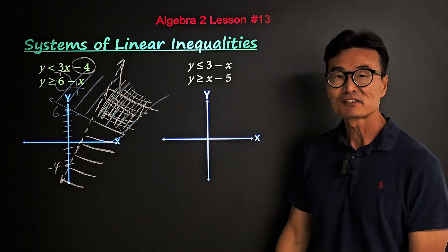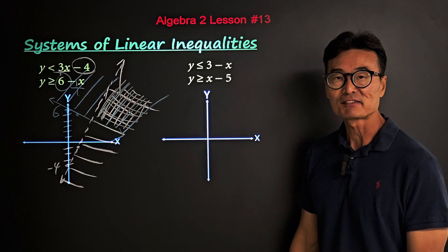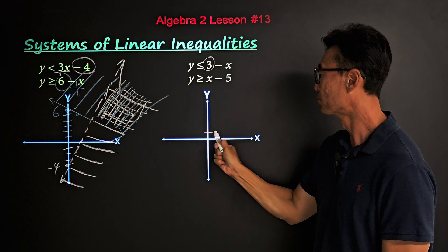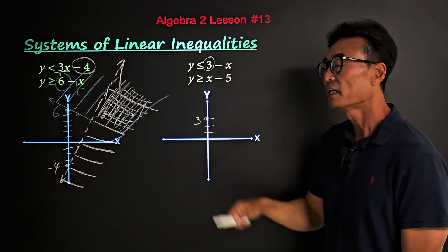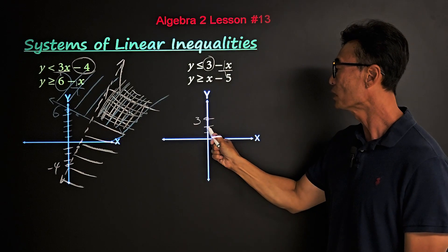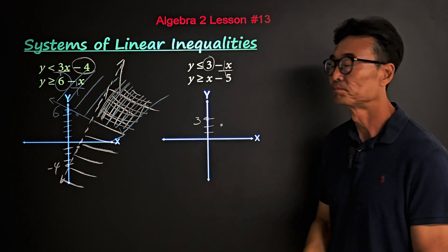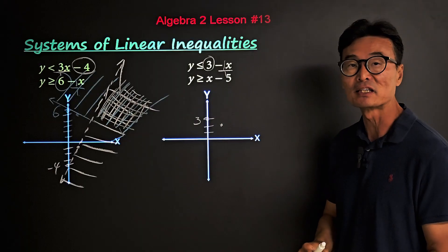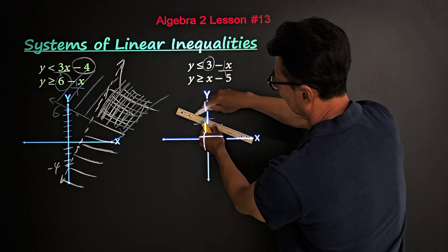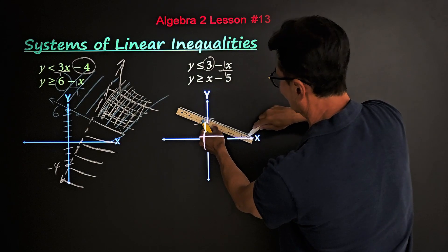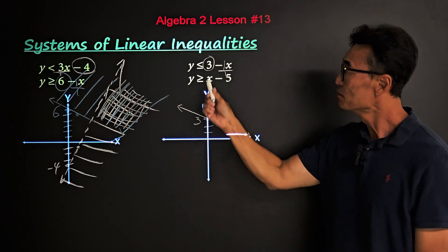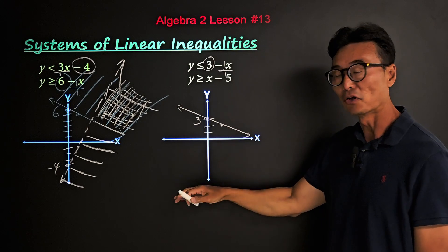Here's another example of systems of linear inequalities. The first one is y is less than or equal to three minus x, so the y-intercept is three. The slope is negative one, so I go down one and one to the right. Since it's less than or equal, it's going to be a solid line, and we shade below.